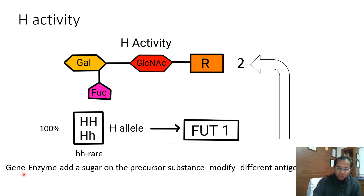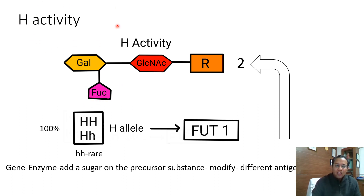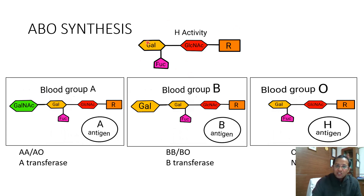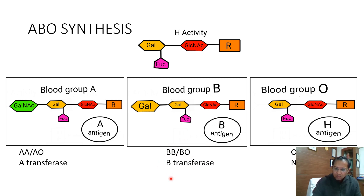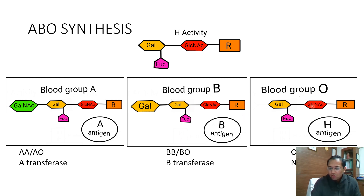The central dogma around ABO is: a gene produces an enzyme — fucosyltransferase 1 — which adds a fucose sugar on the terminal galactose, forming the H antigen. Once we have the H antigen, a person of blood group A will have an A transferase that adds N-acetyl galactosamine to the terminal galactose. If you are blood group B, a B transferase adds galactose to the terminal galactose. If you are blood group O, no sugar is added because there is no transferase.